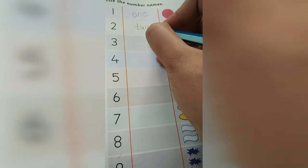Now on page 171. Here, write the number name. What we have to do? O, N, E, 1. 2, you will write T, W, O, 2.